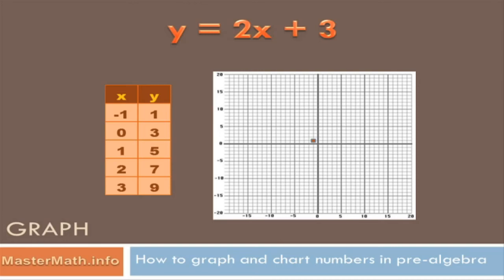Then we've got 0 and 3. Well 0 on the x axis is right there at the origin in the middle. And 3 goes up 1, 2, 3. So I'm going to put a dot right there.